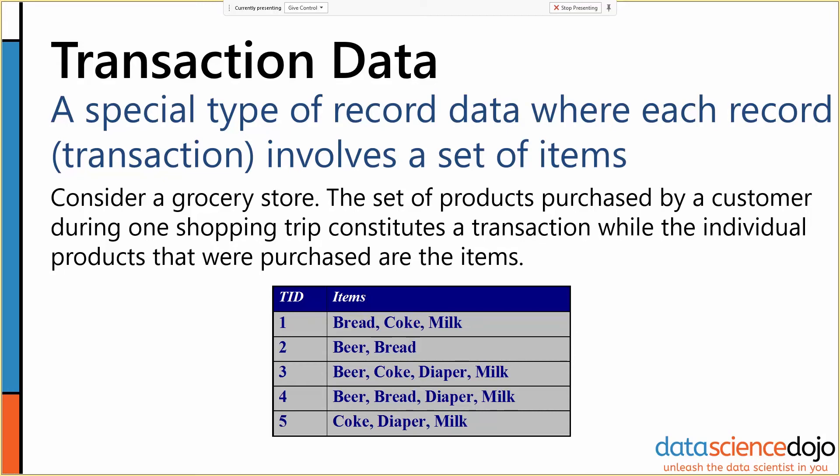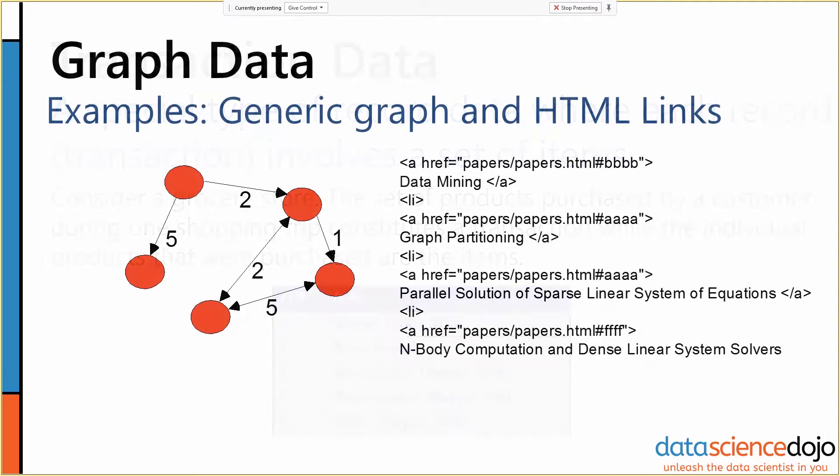The next big category of data that we'll talk about briefly here is graph data. The classic example of course is HTML, the World Wide Web.